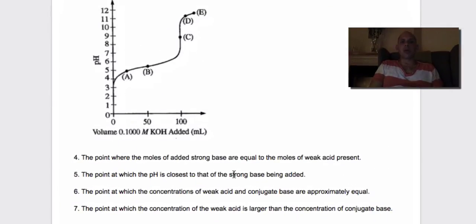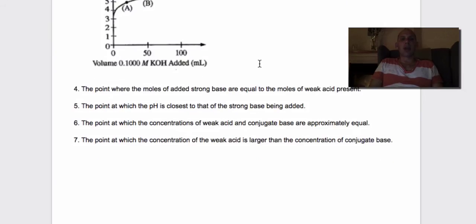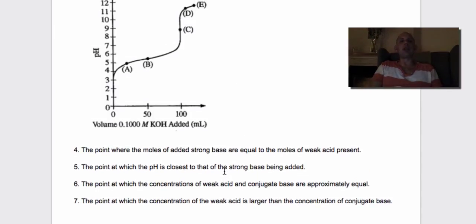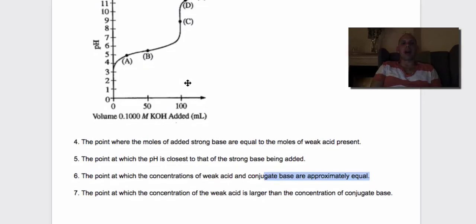Remember, the strong acids are HCl, HBr, HI, HNO3, HClO3, HClO4, H2SO4. Okay, these problems are really cool. The point where the moles of the strong base, the titrant, are equal to the moles of the weak acid - that's exactly when you've neutralized it, they've equaled each other, and that's the equivalence point, C. For this next part, the point at which the pH is closest to that of the strong base - that's going to be E. The highest pH is going to be the closest to the pH of the strong base. Remember, bases have high pH. The point at which the concentration of the weak acid and conjugate base are approximately equal - now that's the definition of a buffer. They're equal because we have enough base to neutralize any excess acid in the stomach and enough acid to neutralize any base in the stomach.